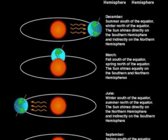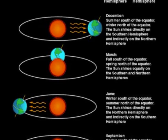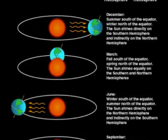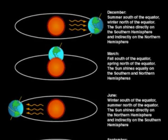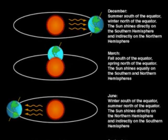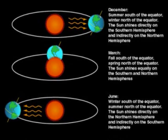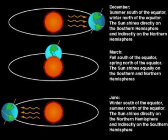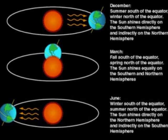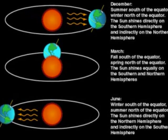The Sun shines equally on the southern and northern hemispheres around March. South of the equator is experiencing fall, while north of the equator is experiencing spring.